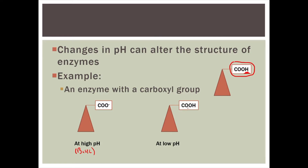Similarly, at low pH, it doesn't want to give up this H because there's already a lot of H⁺ present in the solution, so this structure basically remains fixed. For some enzymes, being able to change shape is actually important so that it can facilitate reactions. So you have a situation where at one pH the enzyme can deform, and at another pH the enzyme can be prevented from doing its function because there's too much H⁺. Being able to maintain proper pH is important for a lot of biological processes.